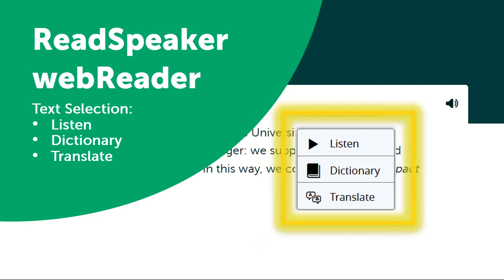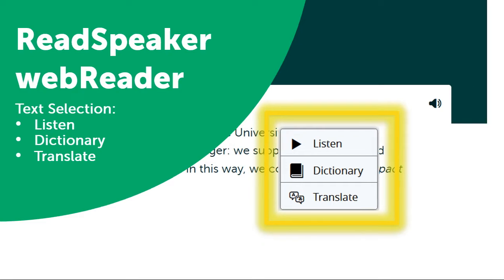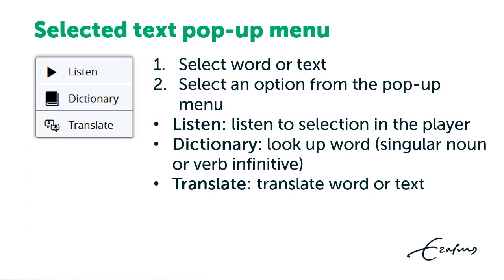Select a word or some text to see these options in the pop-up menu. To listen to part of a web page, select the text and click Listen that appears in the pop-up menu. As the text is read, the page will scroll down automatically. Once the Listen button is out of view, a pop-up control panel will appear in the bottom right-hand corner.